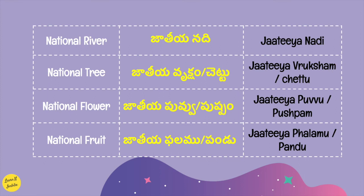Now let's see the last set of national symbol terms. National river in Telugu is Jatiya Nadi. National tree is Jatiya Vruksham or Chettu. National flower is Jatiya Puvu or Jatiya Pushpam. National fruit is Jatiya Falamu or Jatiya Pandu.